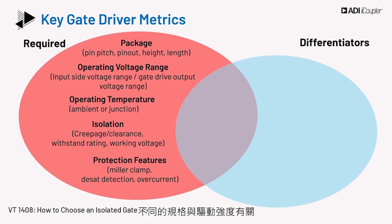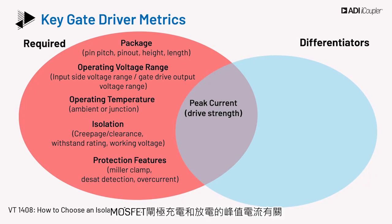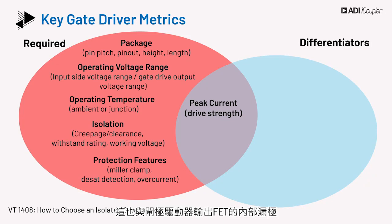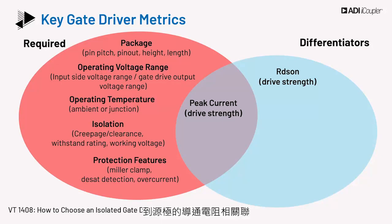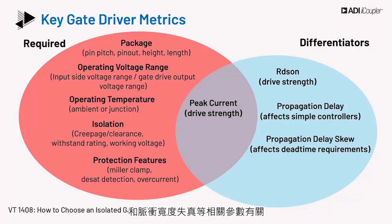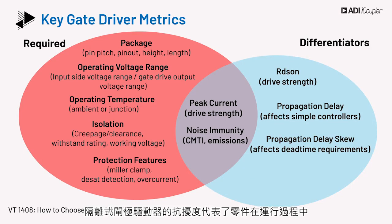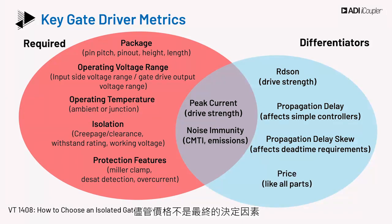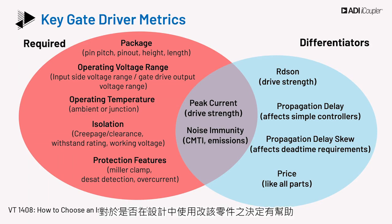The differentiating specs are linked to drive strength, which relates to the value of the peak current that the part may deliver to charge and discharge the MOSFET gate. This is also tied to the internal drain-source resistance, RDS on, of the gate driver output FETs. The timing performance specs are related to propagation delay and associated parameters like skew and pulse width distortion, which affect system design. Noise immunity of the isolated gate driver is the signal strength integrity of the part under various transients and other radiated emissions while in operation. Finally, price is an important consideration, though it is not a final decider.